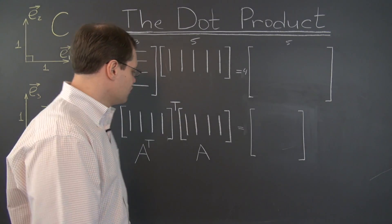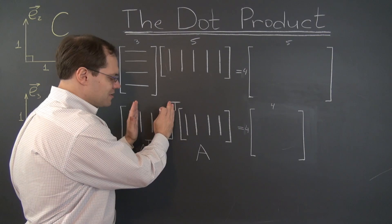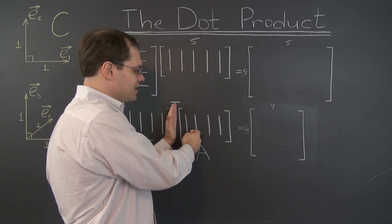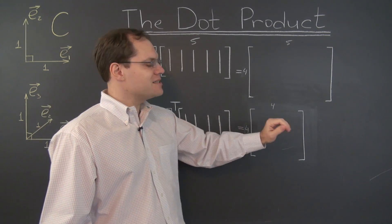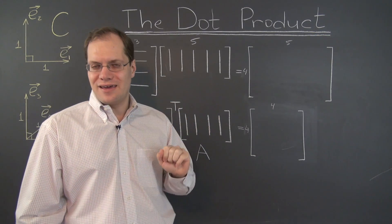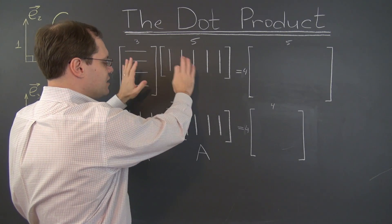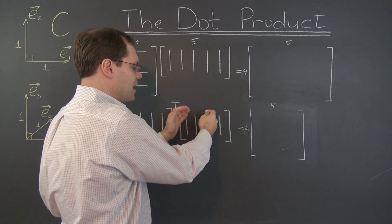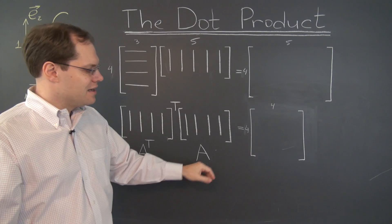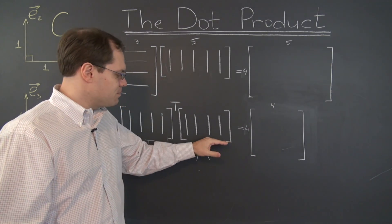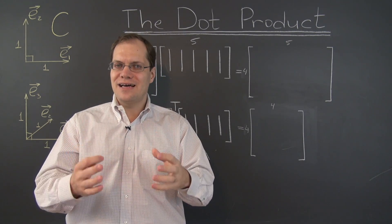So what we have in this matrix is the dot product interplay among the columns of A. This matrix would be four by four, so we have 16 numbers — all possible combinations of dot products of the columns of A. If we're only interested in a single set of vectors and how these vectors interact within themselves, we multiply A-transpose by A and get the matrix of all possible dot products among those vectors.